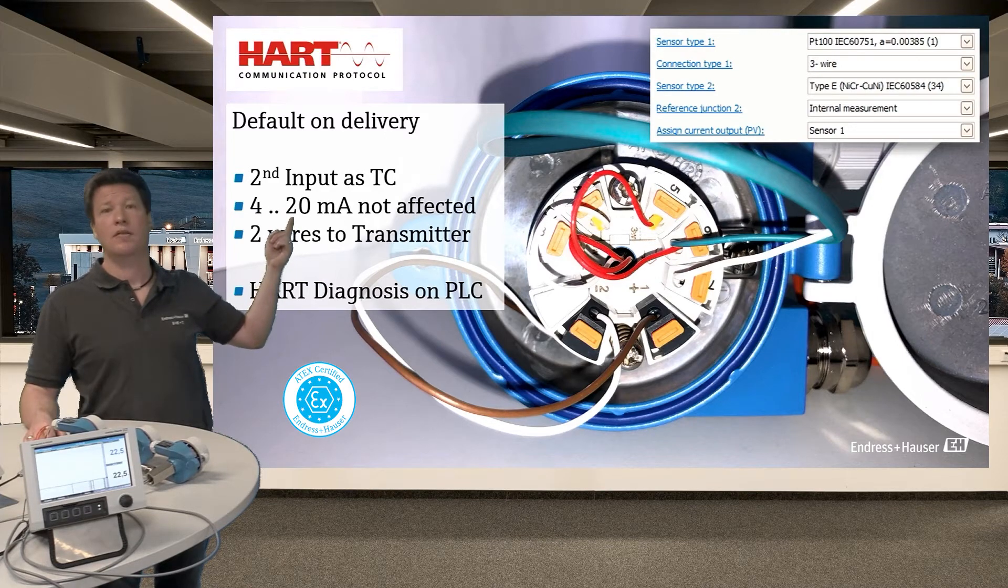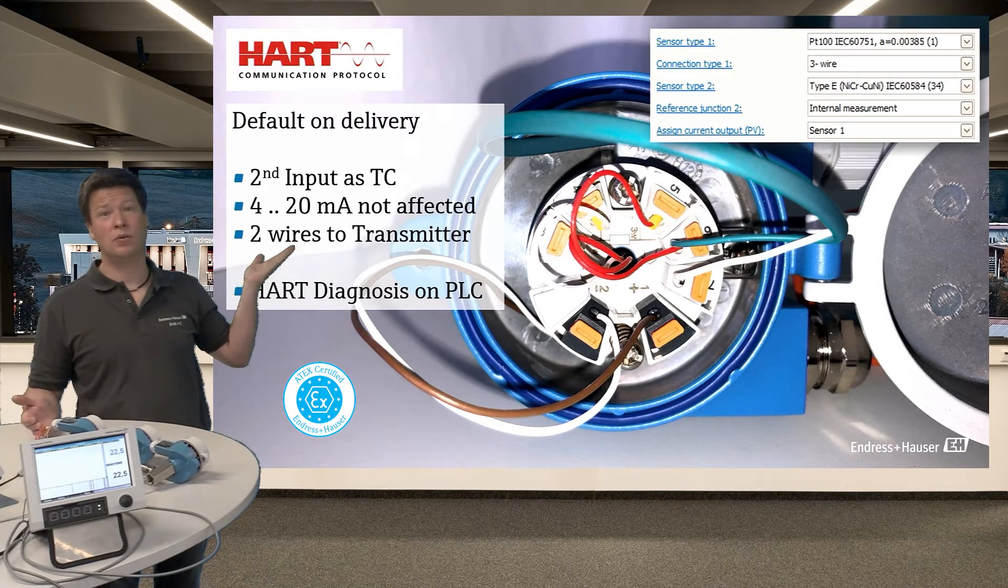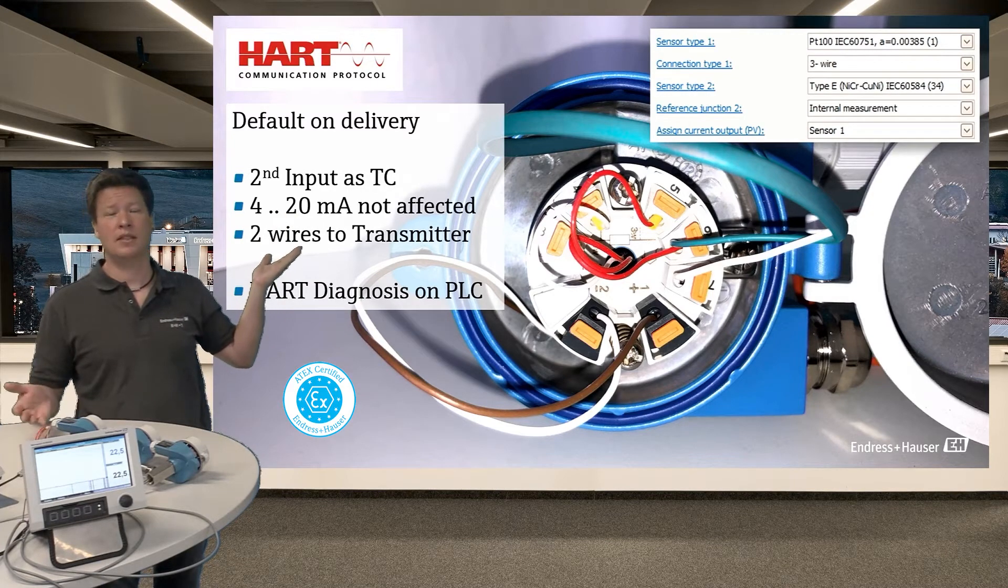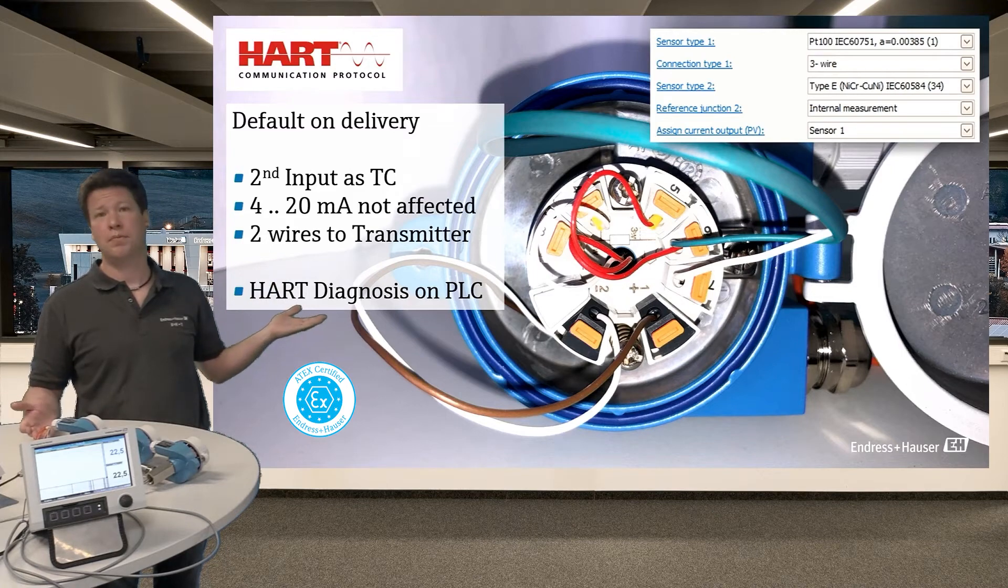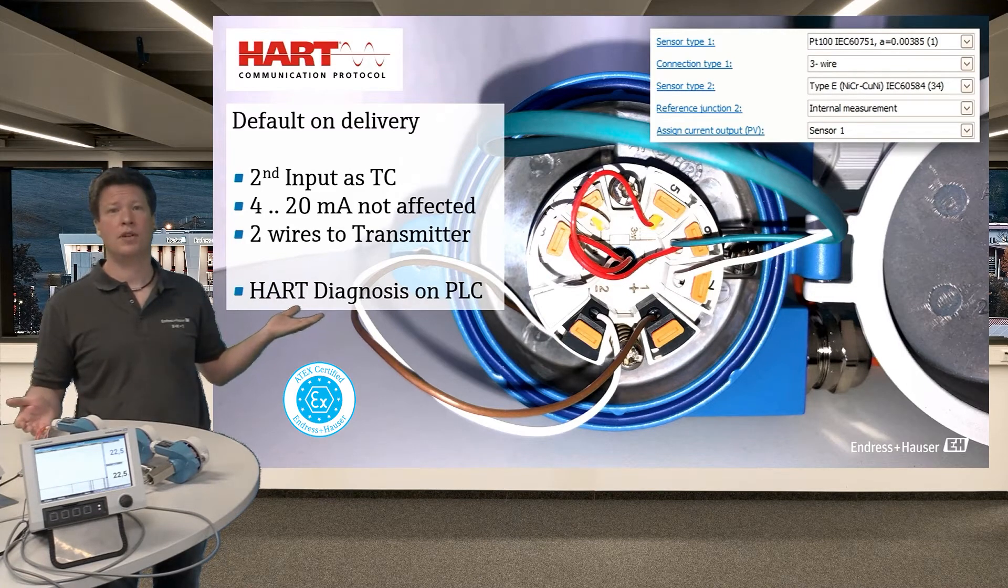Benefits are 4 to 20 milliamp signal is not affected. We need only two wires to the transmitter, standard installation. But the PLC must support HART diagnosis.